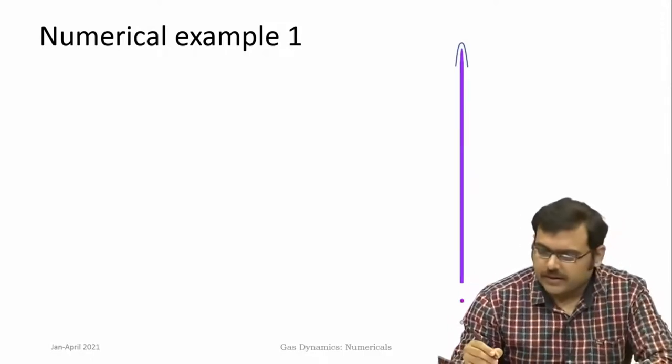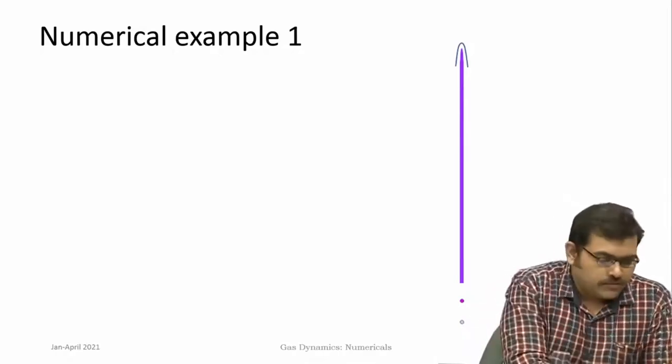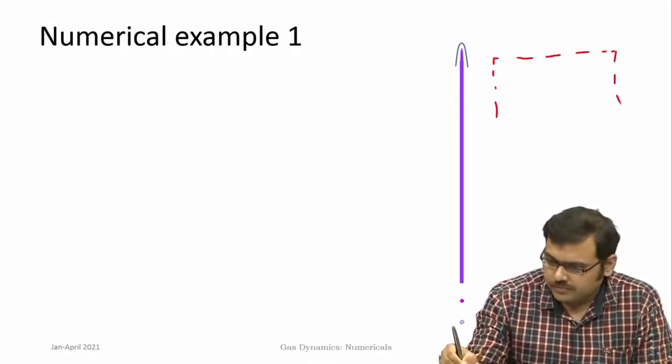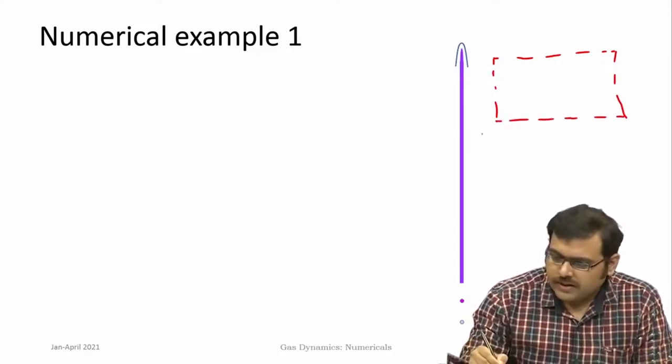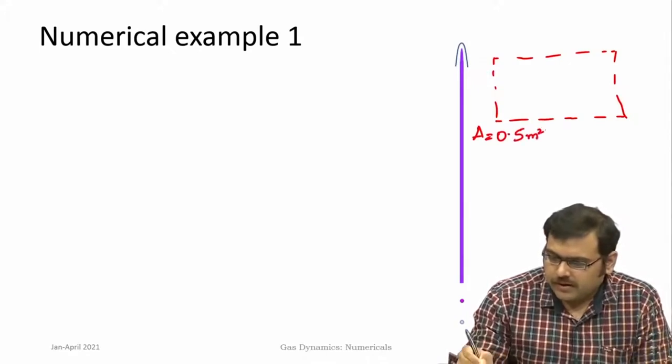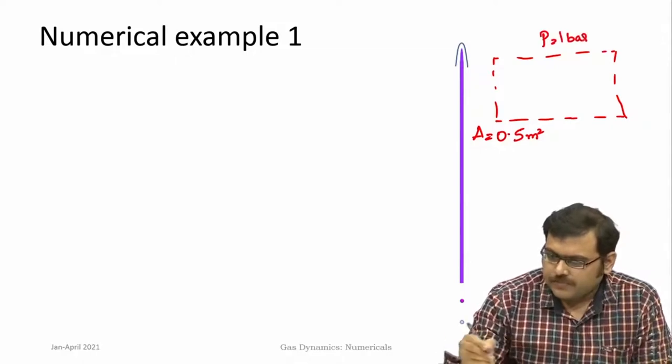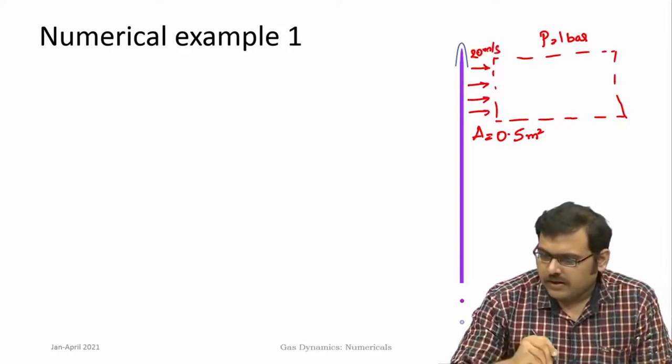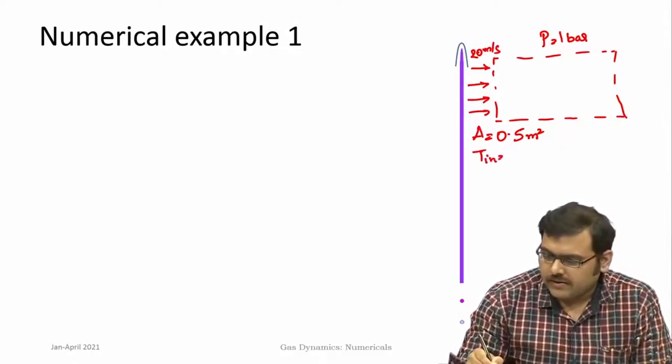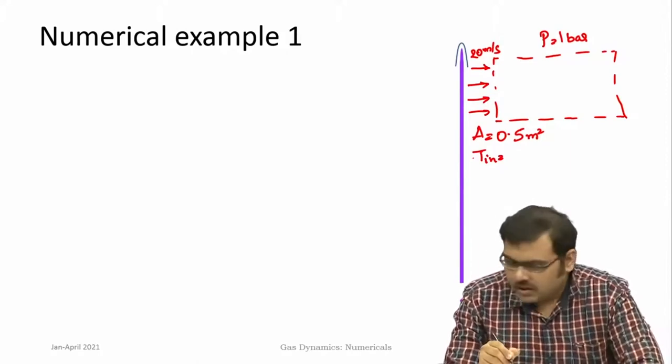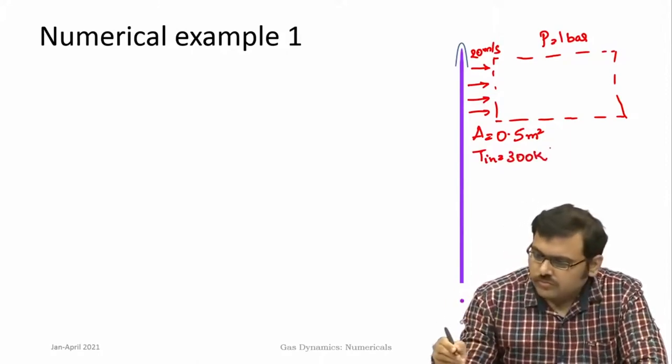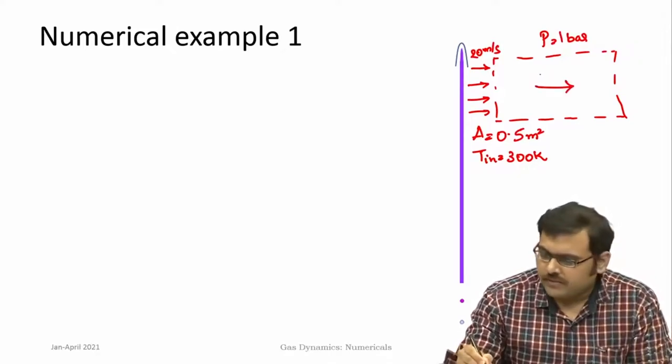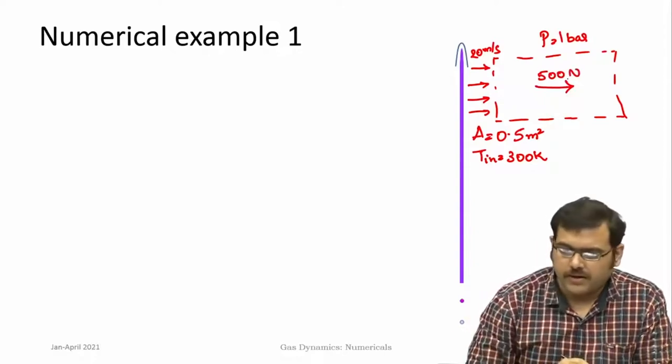Let us look at this particular example. From the picture, this is the control volume and area is given as 0.5 m². Ambient pressure is 1 bar everywhere. Flow is coming in at 20 m/s and temperature at this end is given as 300 K. It is given that flow properties are uniform at the other end. And there is a force of 500 N that is getting applied over here.